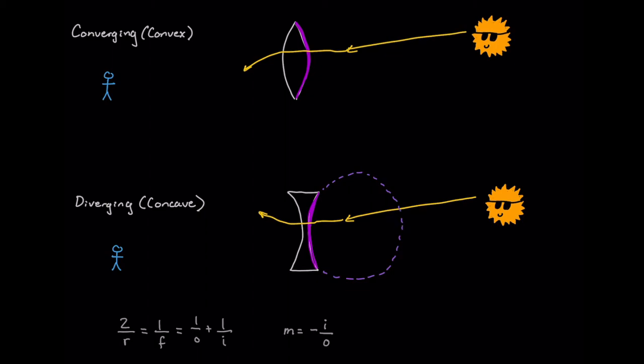And for a converging lens, we'll extrapolate a circle out like this. And you'll notice they go in opposite directions. So in the middle we have our r, our radius of curvature.